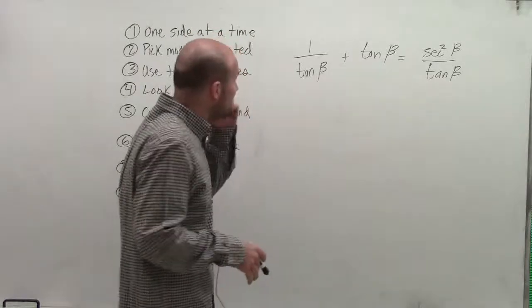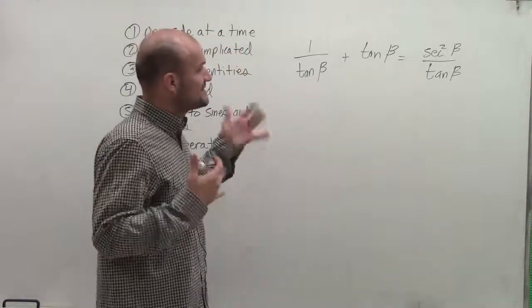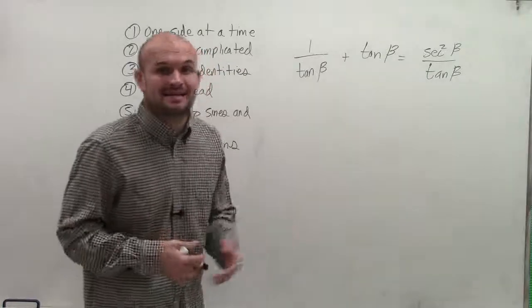OK, so welcome. What I have is 1 divided by tangent of beta plus tangent of beta equals secant squared of beta divided by tangent of beta.